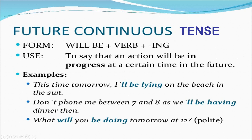Let's understand with an example. Suppose it is 12 o'clock now — 12 PM. At 12 PM tomorrow, what will you be doing? You can say: 'This time tomorrow, I will be lying on the beach in the sun.' Maybe you are going on vacation. When we go on vacation by train or plane, we say at this moment I would be doing this — you make plans with siblings, friends, or parents. See here: 'will' plus 'be' plus verb plus '-ing' — that is future continuous tense.